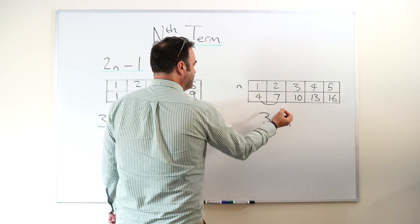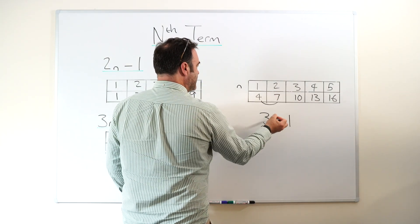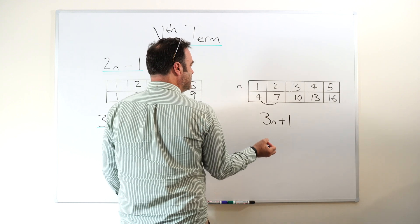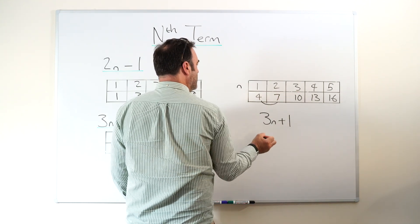Let's test it. Three times two is six, plus one is seven. It works. Three times three is nine, plus one is ten. It works.